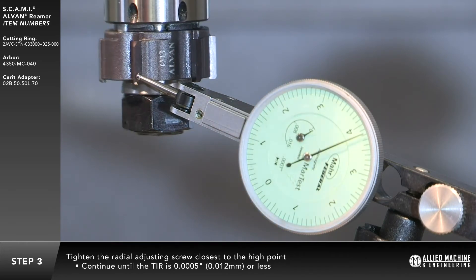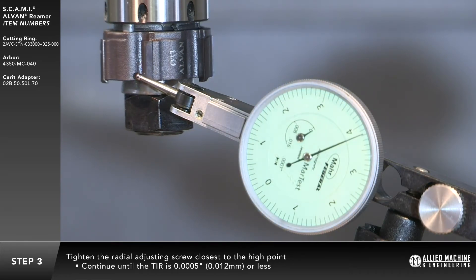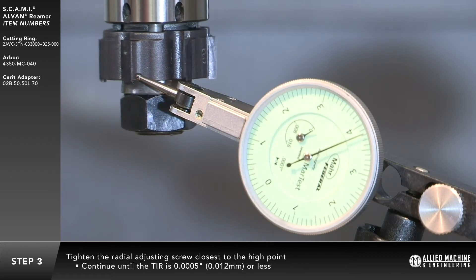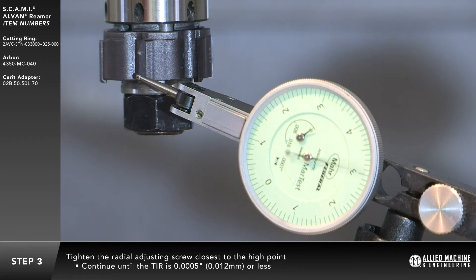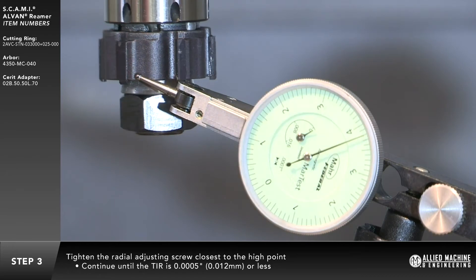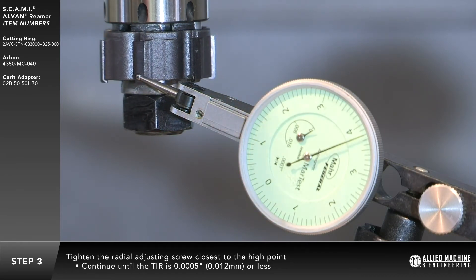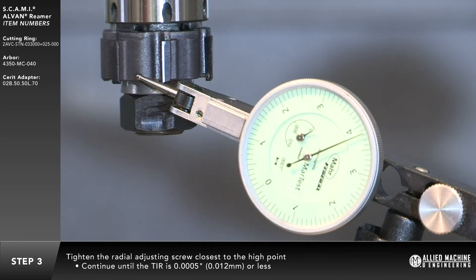Tighten the radial adjusting screw closest to the high point. Continue to do this until the TIR is 5 tenths of an inch or 0.012 millimeters or less.